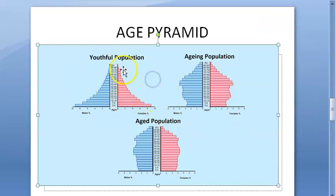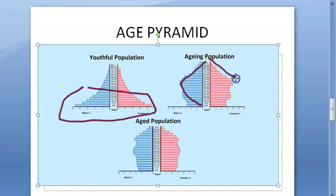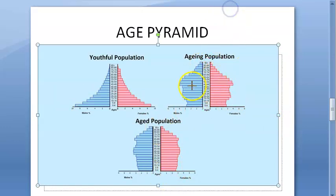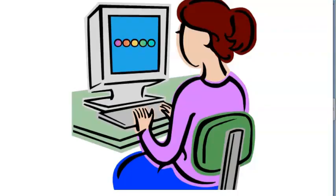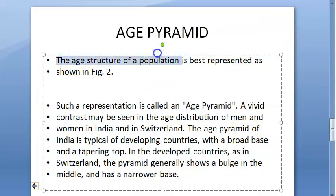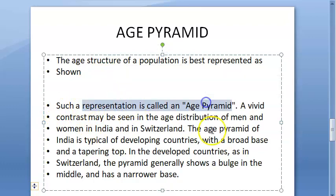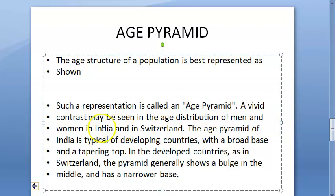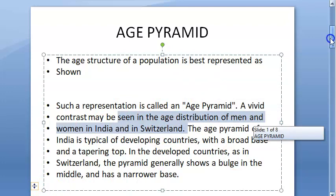When you see a wide base you say 'young population, expanding.' An aged population has people who are all going to become old, and the base will be narrow. The textbook says age structure of population is best represented as a pyramid — this is called an age pyramid. A vivid contrast may be seen in the age distribution of men and women in India and Switzerland.